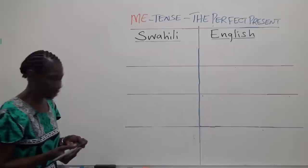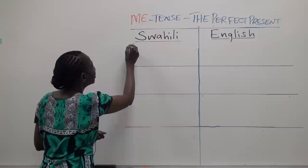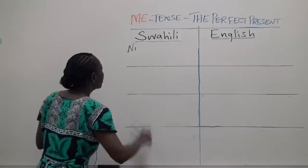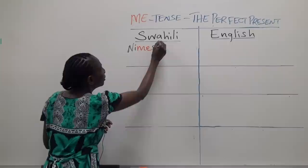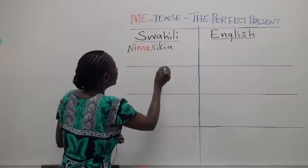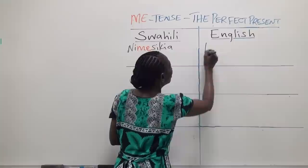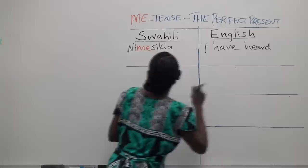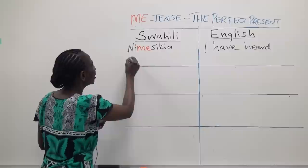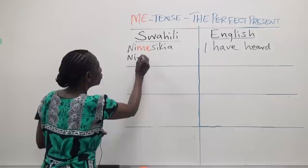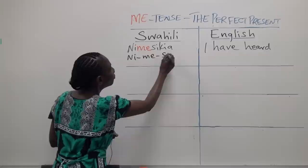This sentence: Nimesikia. The English translation of this sentence would be 'I have heard.' We can break this sentence further: NI being the subject prefix, then ME the present perfect tense marker, and then Sikia, which means 'listen.'